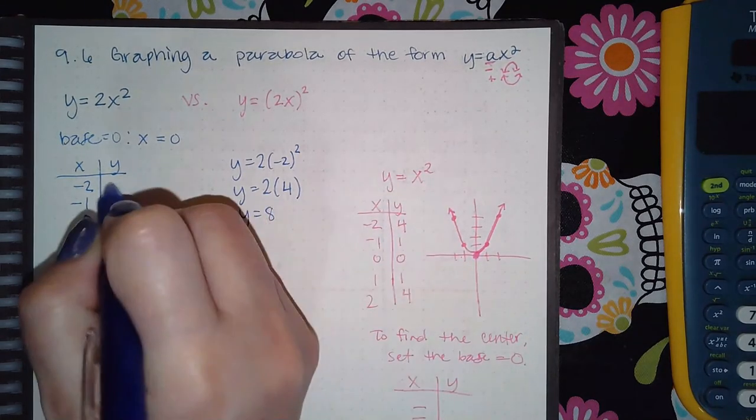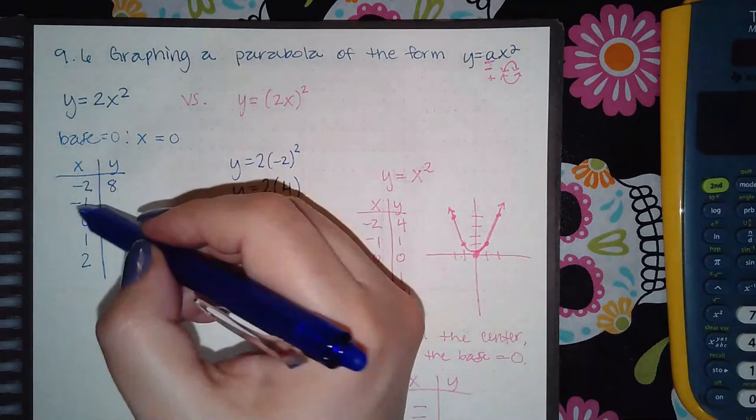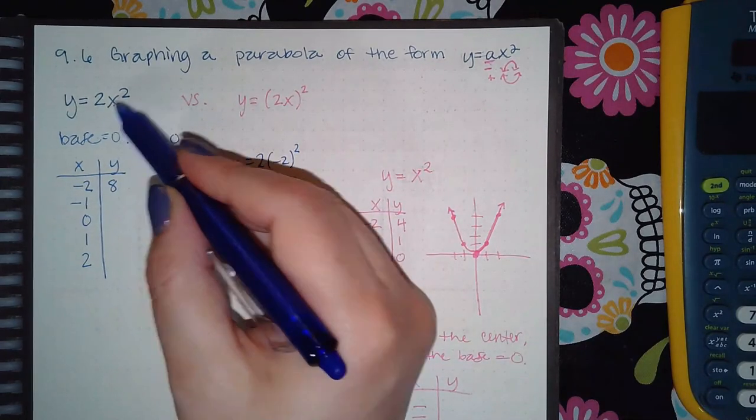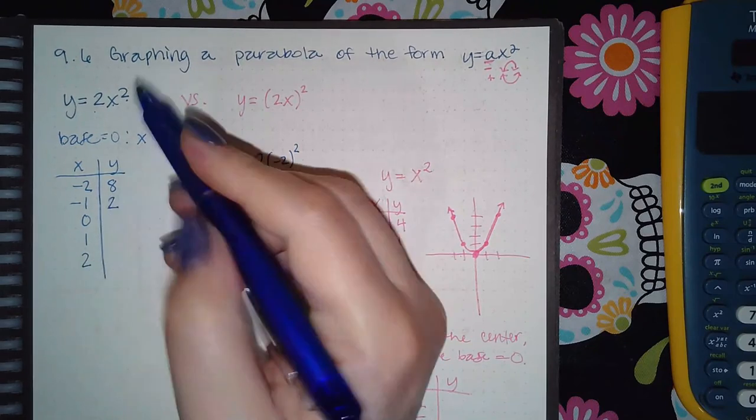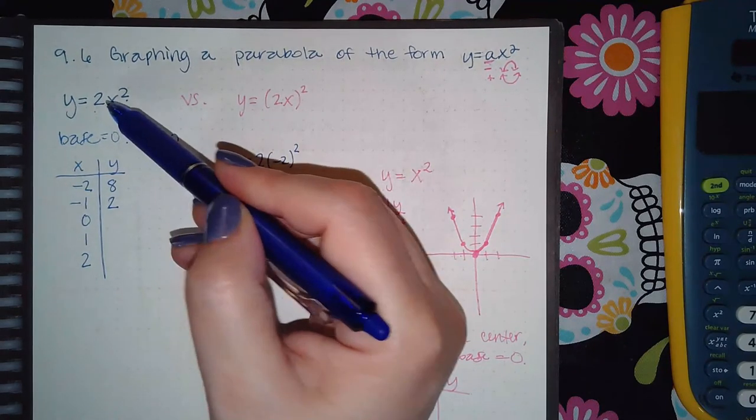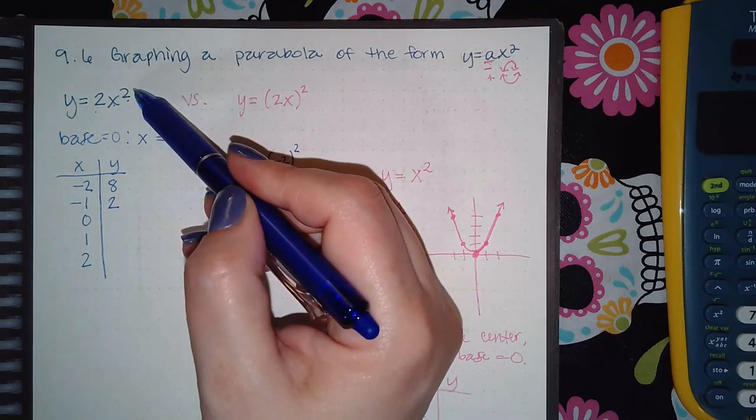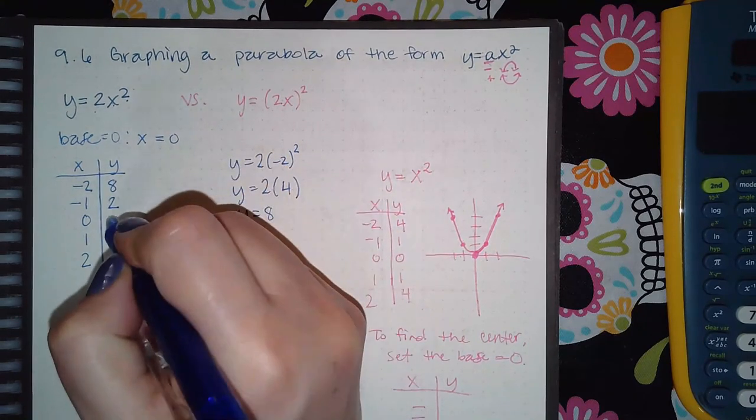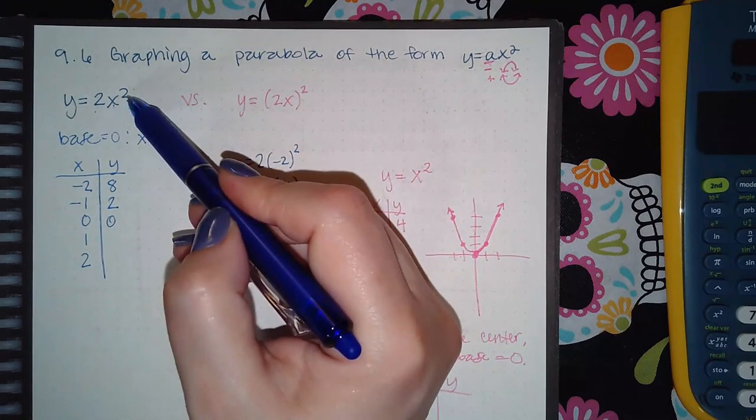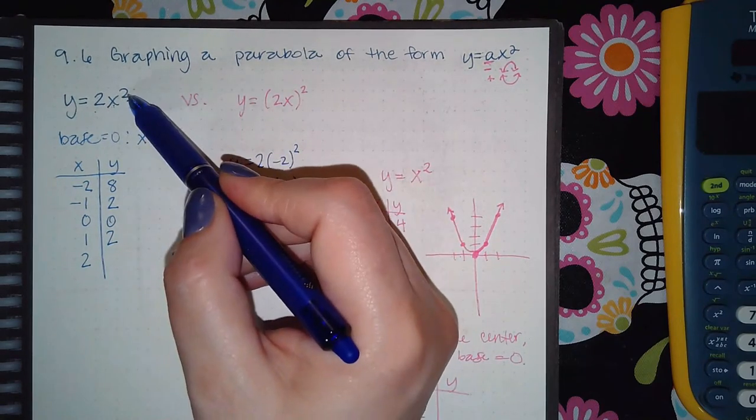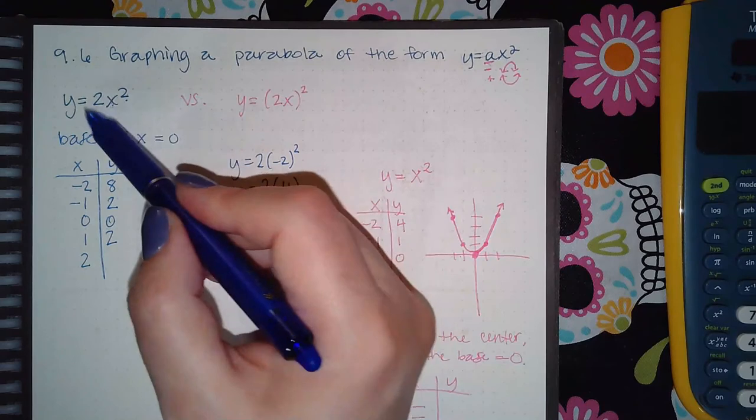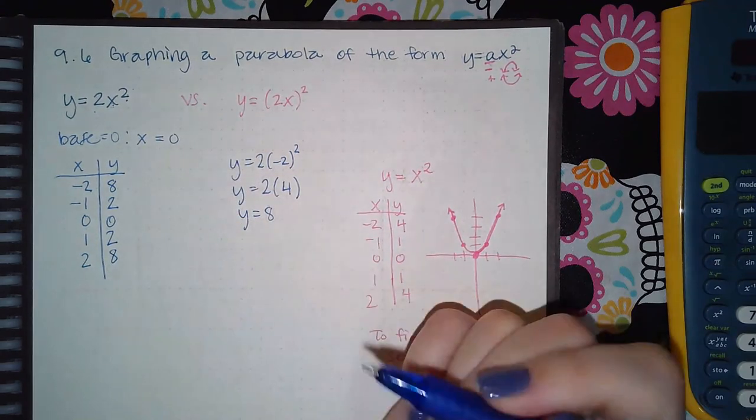If I plug in negative one, negative one squared is positive one times two is two. When I plug in zero, zero squared is zero times two is still zero. One squared is positive one times two is two, two squared is four and four times two is eight.